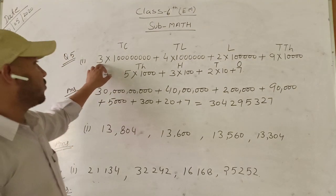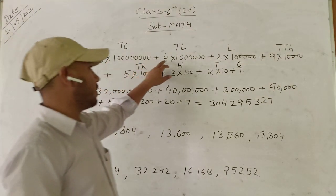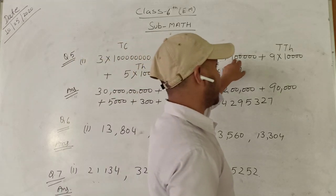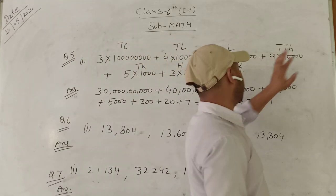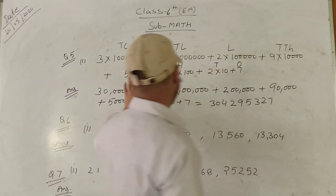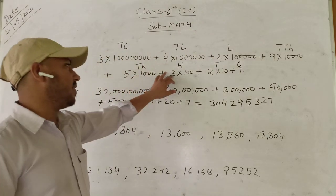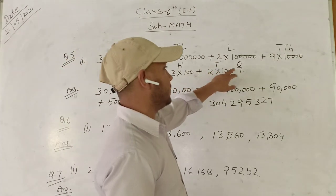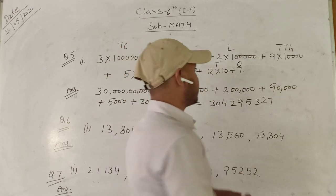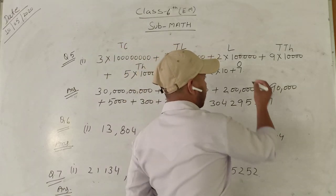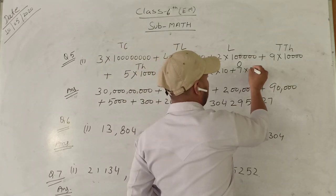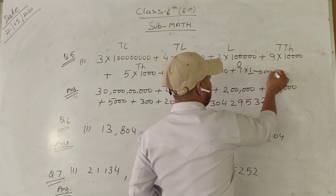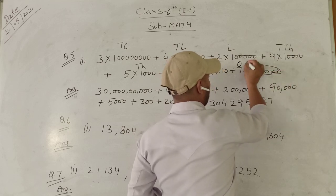3 multiplied by 10 lakhs, and 2 multiplied by 1 lakh, and 9 multiplied by 10,000, and 5 multiplied by 1000, and 3 multiplied by 100, and 2 multiplied by 10, and 7 multiplied by 1. Because 1 is positioned on the ones place — ones means the face value 4, giving us 7.